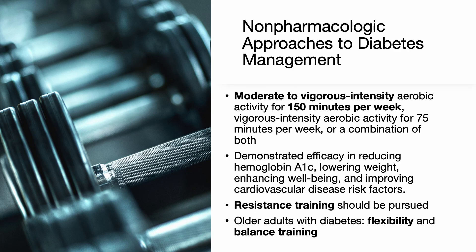Physical activity recommendations include engaging in moderate to vigorous intensity aerobic activity for 150 minutes per week, vigorous intensity aerobic activity for 75 minutes per week, or a combination of both. This level of activity has demonstrated efficacy in reducing hemoglobin A1c, lowering weight, enhancing well-being, and improving cardiovascular disease risk factors. Resistance training should be pursued 2 or more times per week. For older adults with diabetes, incorporating flexibility and balance training 2–3 times per week, if feasible, is advised.